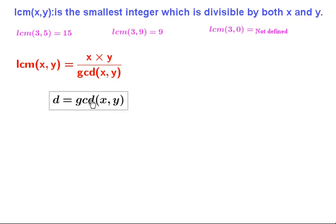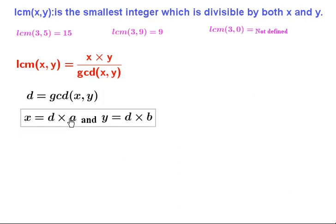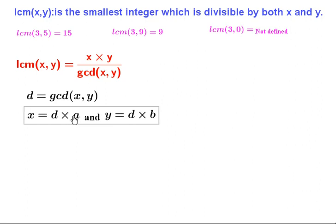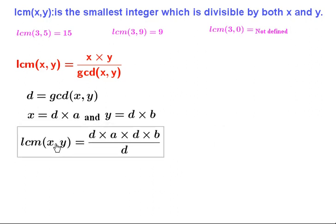Let's prove this relation. Let d = GCD(x, y). Then we can write x as d times a, and y as d times b. Importantly, a and b are relatively prime — they share no common factors — because if they did, we could increase the value of d, which would contradict d being the GCD. So a and b are coprime, and x = d*a, y = d*b.